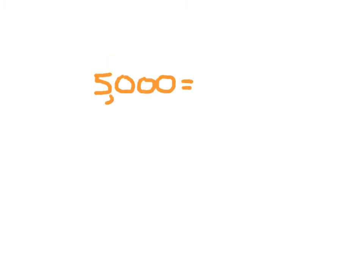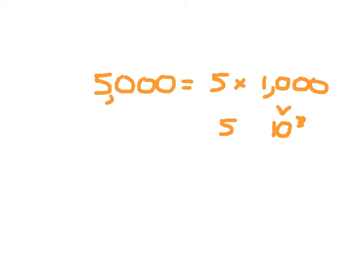5,000 in much the same way can be rewritten as 5 times 1,000. 1,000 can be written as a power of 10 — that's 10 to the third power. So 5,000 is just 5 times 10 to the third power.